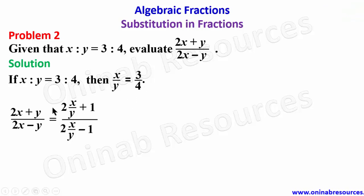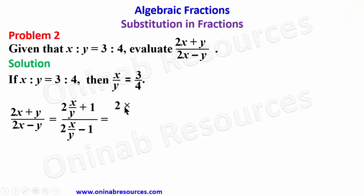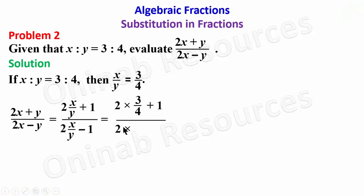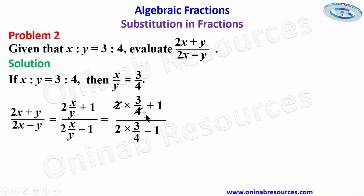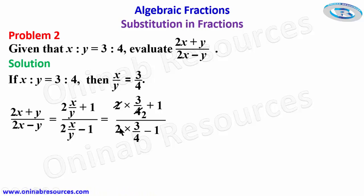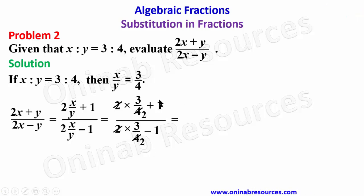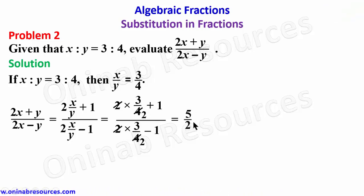So we now have 2 times 3 over 4 plus 1, over 2 times 3 over 4 minus 1. So 2 goes into 4 to give us 2 in the denominator. We now have 3 over 2 plus 1 at the numerator, and 3 over 2 minus 1 at the denominator. At the numerator, 3 over 2 plus 1 gives us 5 over 2.